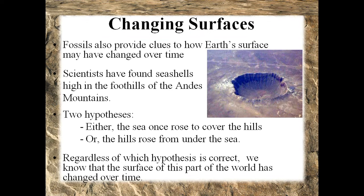Fossils show the changing surfaces — they provide clues to how earth's surface may have changed over time. Scientists have found seashells high in the foothills of the Andes Mountains. This presents a conundrum: how did this happen? There are two hypotheses: either the sea once rose to cover the hills, or perhaps the hills rose from under the sea. Regardless of which hypothesis is correct, we know that the surface of this part of the world has indeed changed over time.